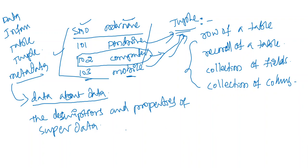So we have database definition: organized collection of logically related data is called a database. We have covered terms: data, information, table, tuple, and metadata. If you have any topic-related doubts about computer awareness, you can comment and we will make a video. If you found this video clear, please share and subscribe to our channel. Thank you very much.